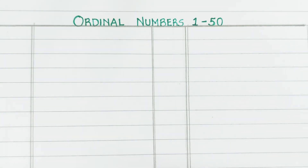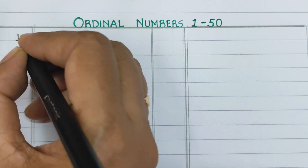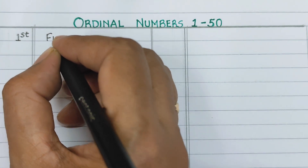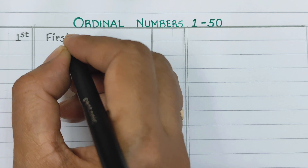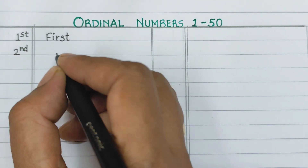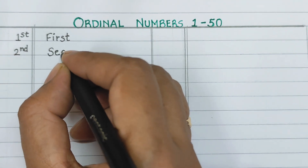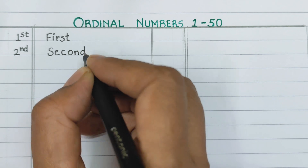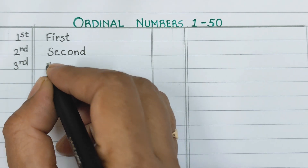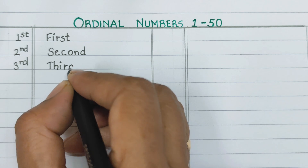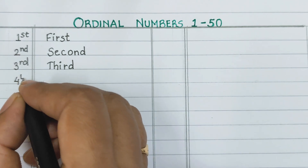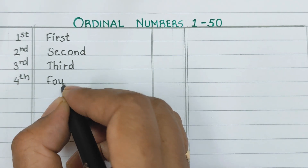Hi and welcome back. In today's video we are going to learn ordinal numbers 1 to 50. First: F-I-R-S-T. Second: S-E-C-O-N-D.